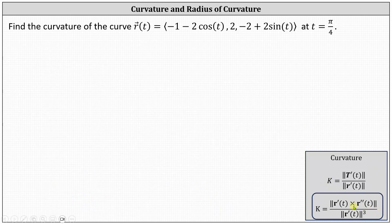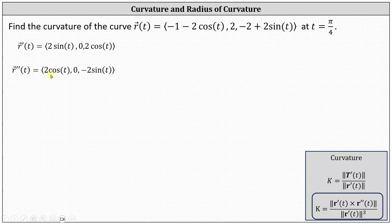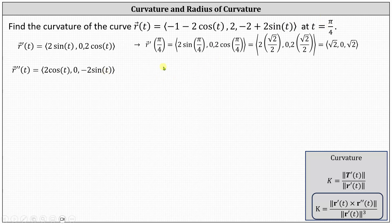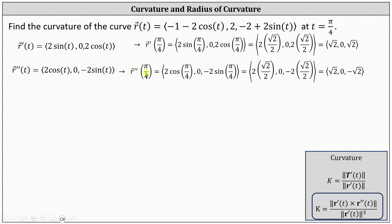In the second method, we need the cross product of r prime of t and r double prime of t. We already found r prime of t. Now we find r double prime of t by differentiating each component of r prime of t: the x component is two cosine t, the y component is zero, and the z component is negative two sine t. Evaluating at t equals pi over four: r prime of pi over four is (√2, 0, √2) and r double prime of pi over four is (√2, 0, −√2).